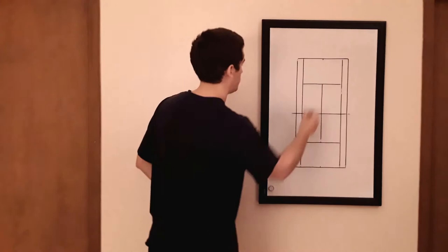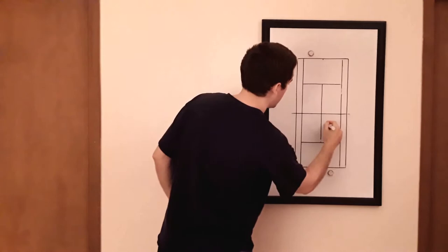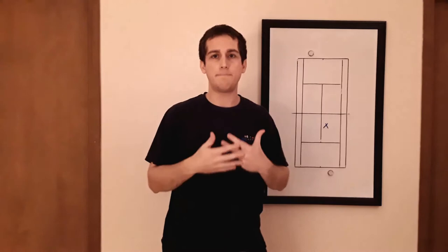So if this is my opponent, and this is me, I'm much more likely to approach the net if I get a ball that lands somewhere around here. So getting that short, easy ball can cause you to come in, but it can also cause you to win independently of coming in.